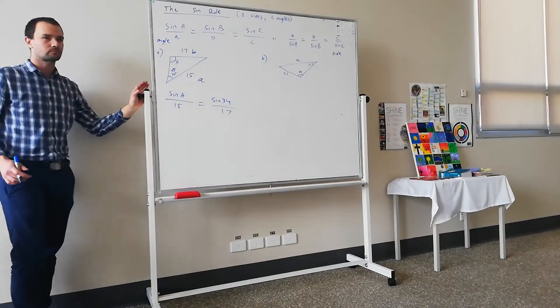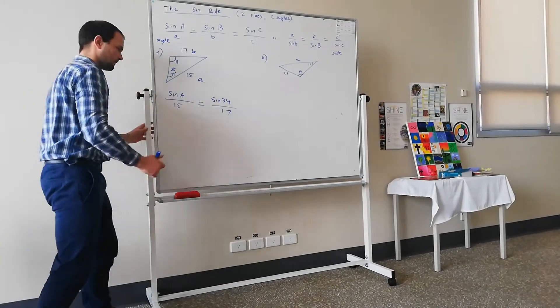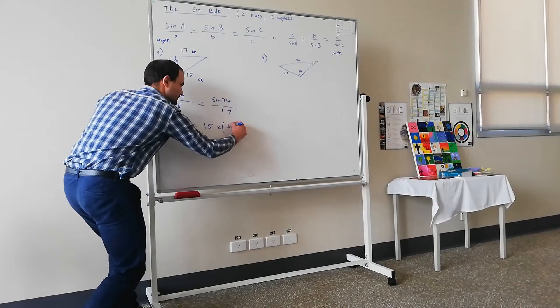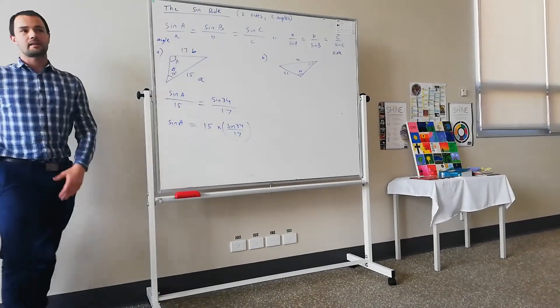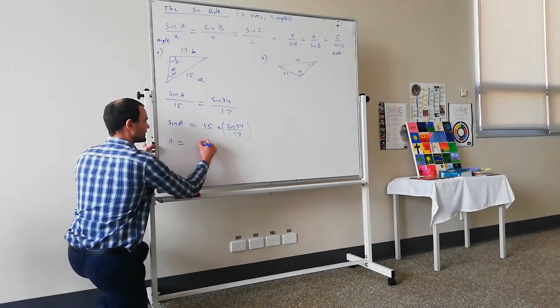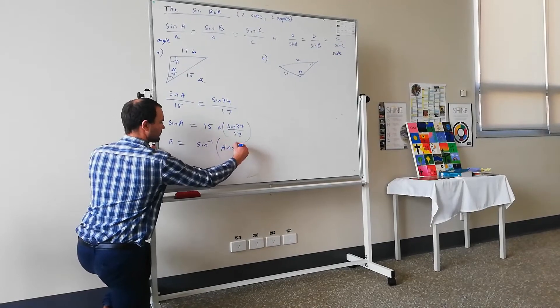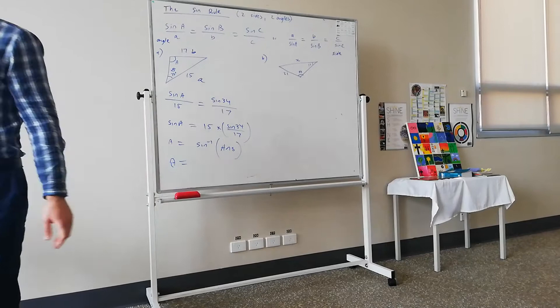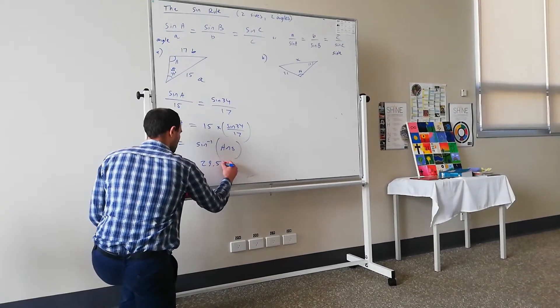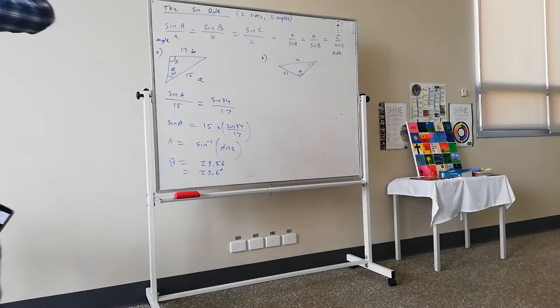Now this equation I'm rearranging. I want to get this variable A by itself. So I'm just going to multiply both sides by 15, so I'm going to move the 15 up here. And we've got this sine 34 on 17. At this stage if you wanted to, you could calculate it to a few significant figures. But we want to maintain that through. And so then to get A by itself, it's inverse sine, and then whatever our answer is here. Let's plug that in. So I'll calculate that to degrees. Make sure your calculator is in degrees. 29.56. 29.56 degrees.